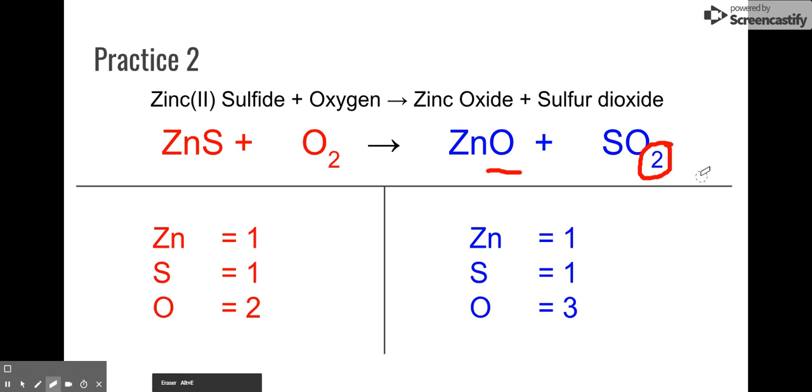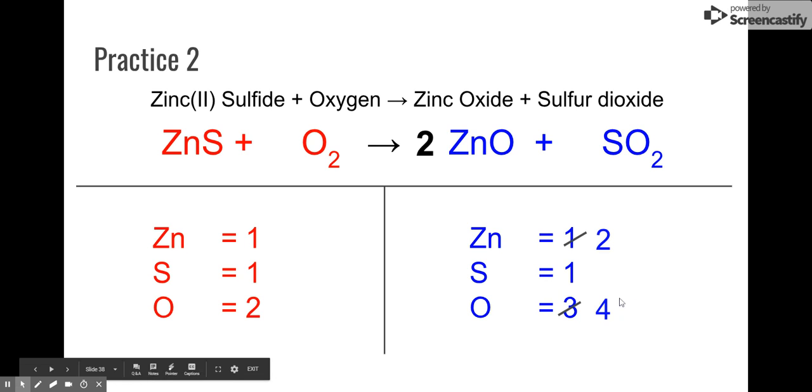Now, I want to fix that one oxygen first because it's hard to match up things that are odd. So to do that, I'm going to times this one by two. That changes that oxygen to be a four because there's two oxygens here plus two oxygens there. So I've got four. But it also changes my zinc. So I have two of those. So now I need to go back and fix my zinc.